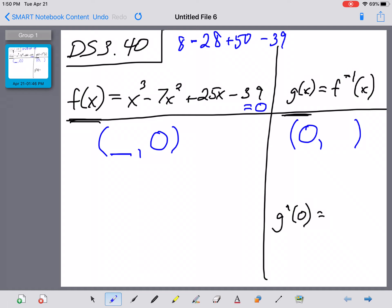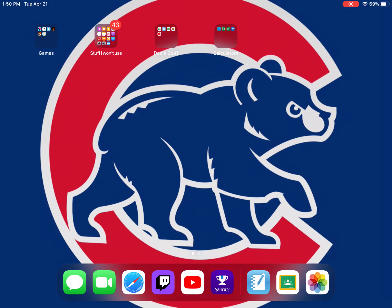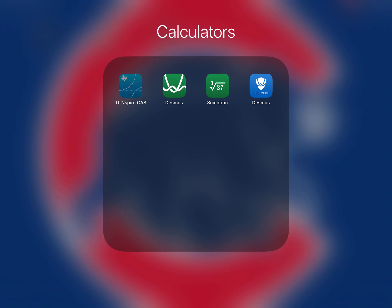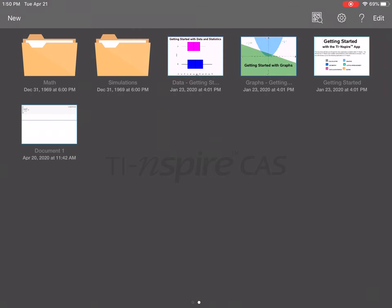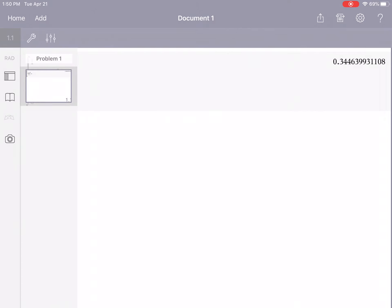The 8 minus 28 would be a negative 20, plus 50 is 30. No, that doesn't seem to work either. So, rather than just groping around in the dark here for a while, let's go to our calculator and see what we can do in order to solve that quickly.